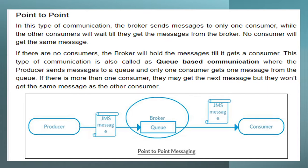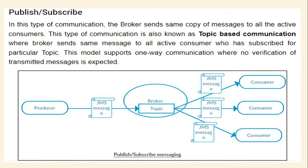Here in this diagram you can see we have a producer and we have a consumer. Once the producer sends a message, it goes to the message broker and then it reaches the consumer. That was the point-to-point model.